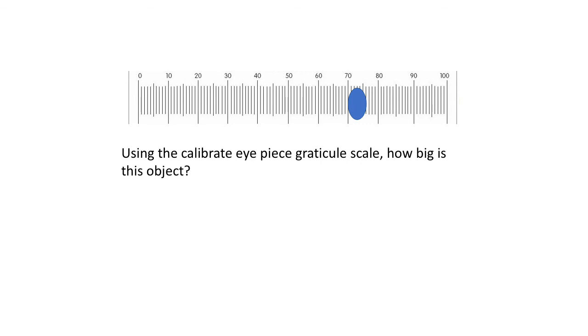Let's look at another example. How big is this object? We've lined it up at 70 and it goes until about 76. We've calibrated and not changed the magnification, so we can stick with our original calibration. One eyepiece graticule scale is equal to 5 micrometers. We've got six divisions, so 6 multiplied by 5 means the width of our object is 30 micrometers.